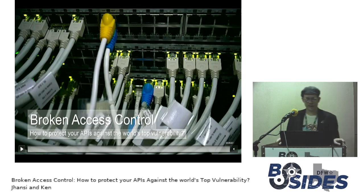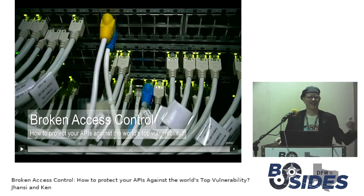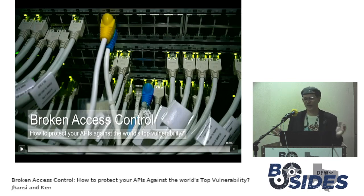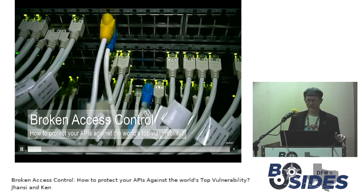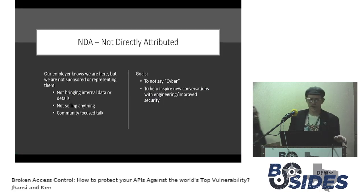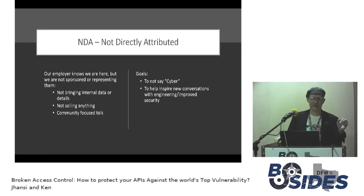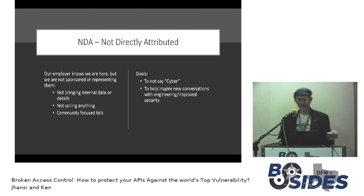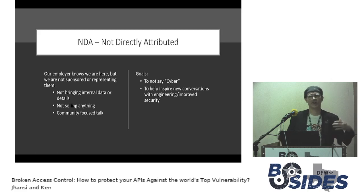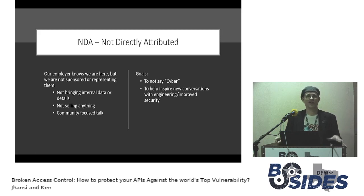Broken access control is something that is incredibly important. It shows up at the top of the OWASP Top 10. It seems obvious, but we're going to talk about what it is and how we can try to actually solve this problem. We're not here representing work, we're not trying to sell you anything, and we're going to try not to say the word 'cyber.' The goal is to talk about how can we address the problem with the industry. The fact that this is the top OWASP issue shows that whatever we're doing is not working.